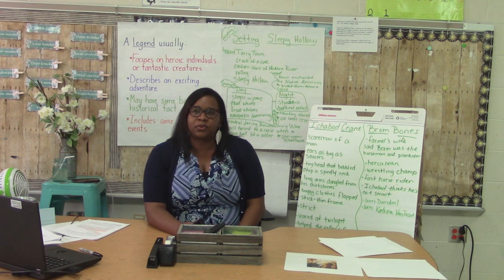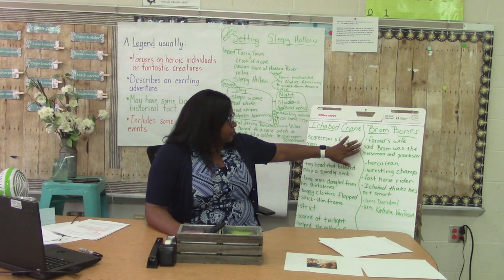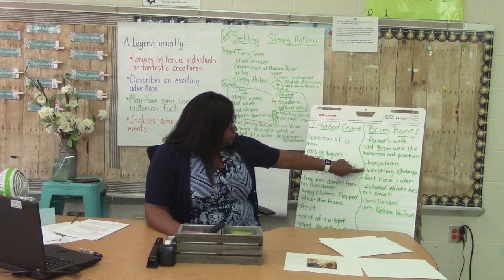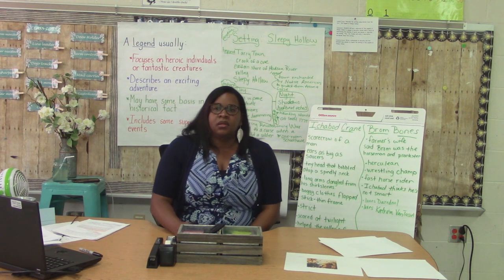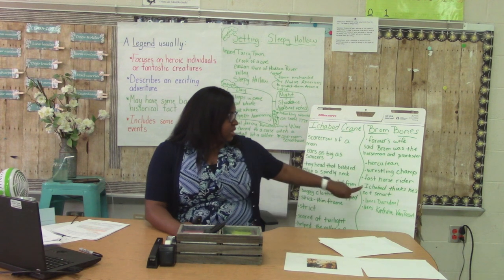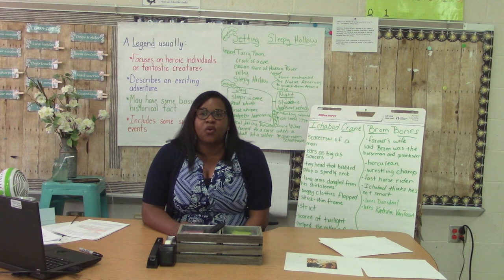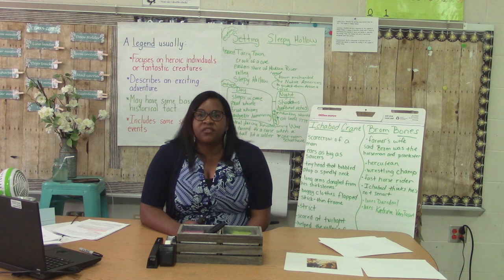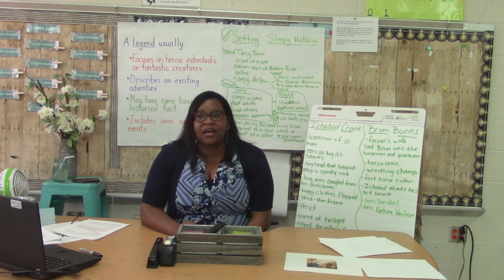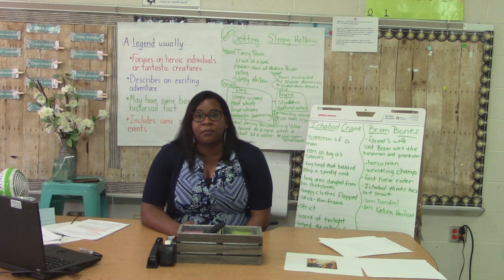This one was a little bit more difficult. These three stand out to me for Brum's physical ability — they think he's the horseman and prankster, Herculean, wrestling champ, and fast horse rider. Put a bracket around those and write 'physical ability.' Then put a bracket around the two things that Brum loves — daredevil and Miss Katrina Van Tassel. Now we have to consider our categories. I know one of the first things I need to do is write an introduction. Take a moment to try to craft an introduction for the prompt: write an explanatory paragraph about how the author Kim Griswold describes the characters Ichabod Crane and Brum Bones using details from the story. Say it out loud until you get it how you want it.